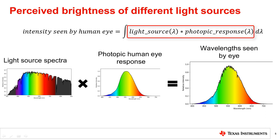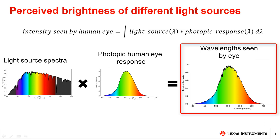This is done as shown in the formula by multiplying the intensity of the light source by the human eye response at each wavelength. Before integrating, this gives the light source spectrum weighted by how the human eye sees it.